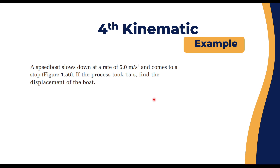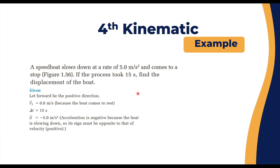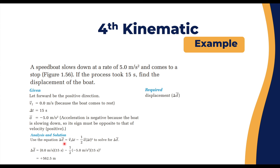Example using the fourth kinematic equation: a speedboat slows at 5 m/s² and comes to a stop in 15 seconds. Find displacement. Here v-final = 0 and Δt = 15 s, but v-initial is unknown. Using Δd = v-final × Δt − one-half × a × Δt²: 0 × 15 − one-half × (−5) × 15² = 562.5 meters.